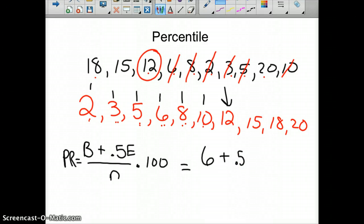So here's our score when they're listed in order. There's 1, 2, 3, 4, 5, 6 of those scores below us. Plus 0.5 times the number of scores that are the same as ours. Well, there's only 1 of those. Divided by the total number of scores, which is 10.